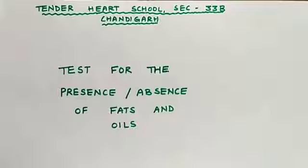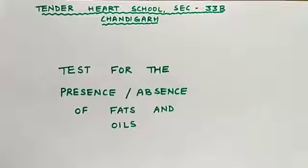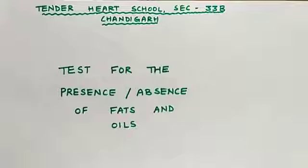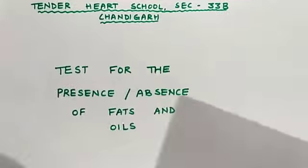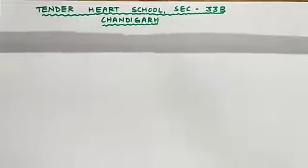Children, if we apply any fat or oil — or any food substance containing fats or oils — on a piece of paper, the paper turns translucent. So now let us start with our activity. Just look at this paper.